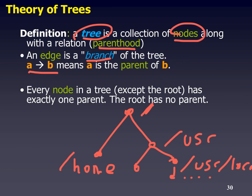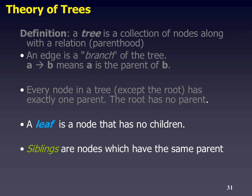An edge is this connection between nodes. A node is one of the dots. Parenthood means this is the parent of this. In Unix terms, the directory above is called 'dot dot' (..) in relation to the current directory. A leaf is just a fancy name for a node that has no children — it's the end bit. In most cases a leaf is actually a file, or it could be a directory without any files in it. Siblings are like brother-sister relationships — nodes which have the same parent.